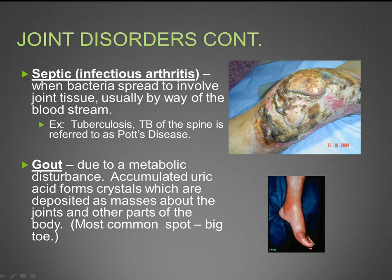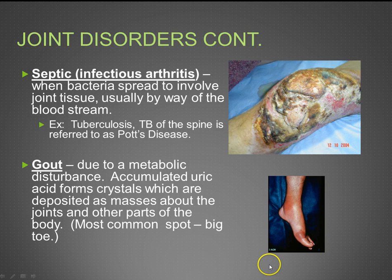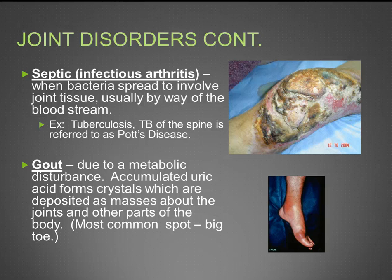Next is gout, which is due to a metabolic disturbance involving the accumulation of uric acid. Crystals form and are deposited as masses about the joints and other parts of the body, most commonly in the big toe. Imagine sharp crystals like needles in your joints — every time you move, those sharp crystals cause lots of pain.